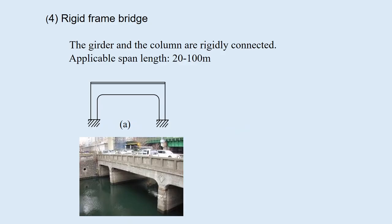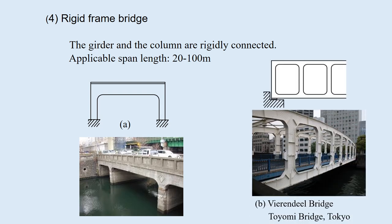4. Rigid Frame Bridge. As shown, the girder and columns are rigidly connected. Another form consists of continuous rigid frames. This is the Toyomi Bridge in Tokyo.